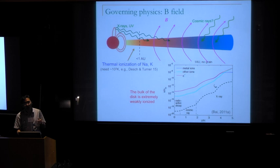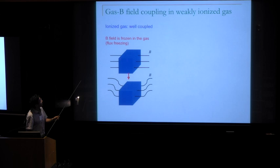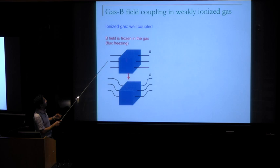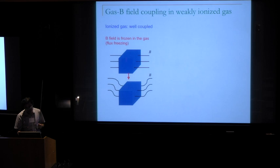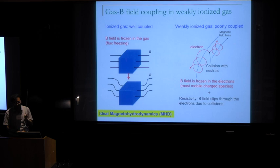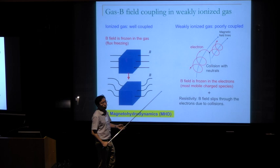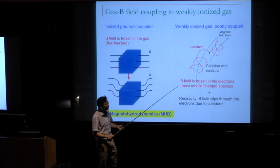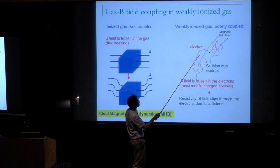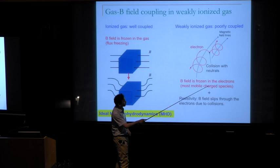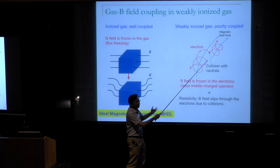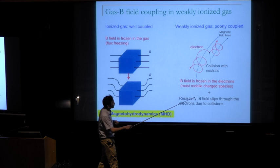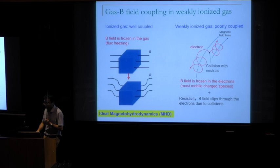Starting from the simplest case: if the gas is well ionized, you have the familiar result of flux freezing — that's ideal MHD. If you are very weakly ionized, electrons are the most mobile species; they gyrate around the magnetic field and occasionally collide with a neutral molecule, jumping from one field line to another. Field lines are essentially frozen in the electron fluid. Due to electron-neutral collisions, the magnetic field can slip through the electron fluid. These are described by non-ideal MHD.